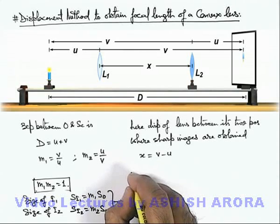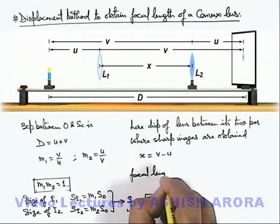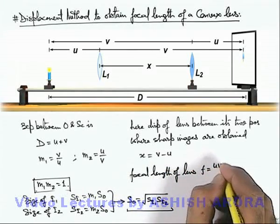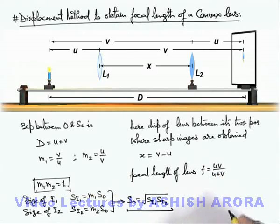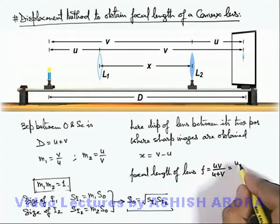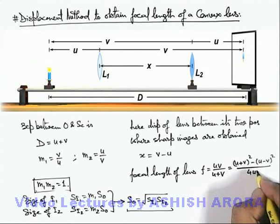And directly numerically the focal length of lens can be given as f is equal to uv upon u plus v, which can be further numerically expanded as u plus v whole square minus u minus v whole square divided by 4 times uv.